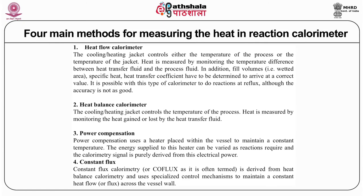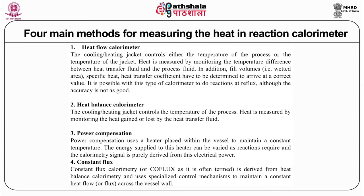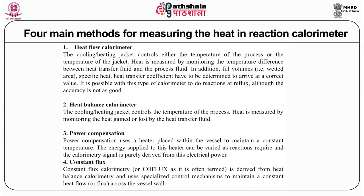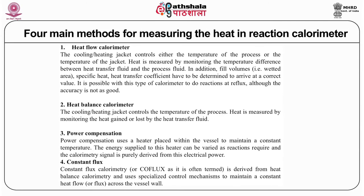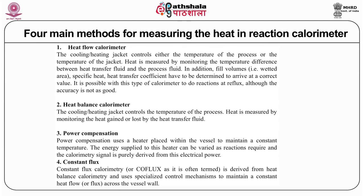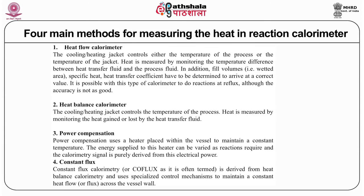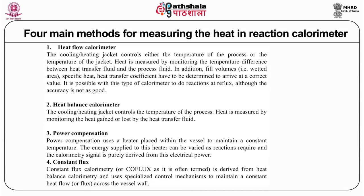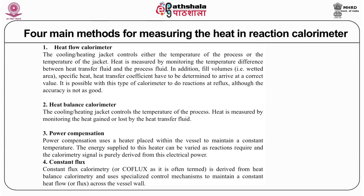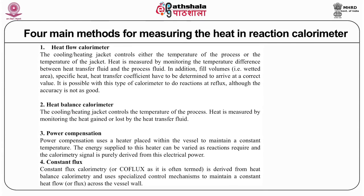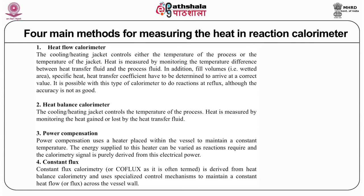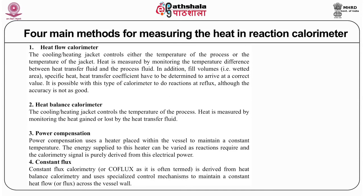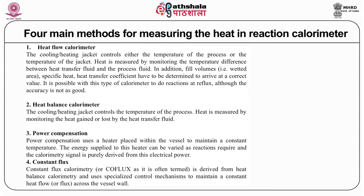The second type is the heat balance calorimeter, where cooling and heating jackets are controlled and heat is measured by monitoring the heat gained or lost by the transfer fluid. The third is power compensation, which uses a heater placed within the cell to maintain a constant temperature — a similar principle will also be used later in microcalorimetry. The energy supplied to the heater can be varied as required, compensating for the different amounts of energy released or absorbed by different reactions.